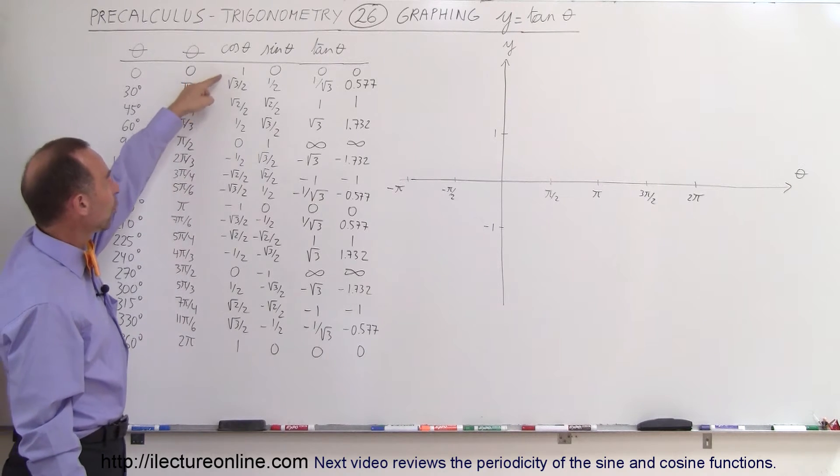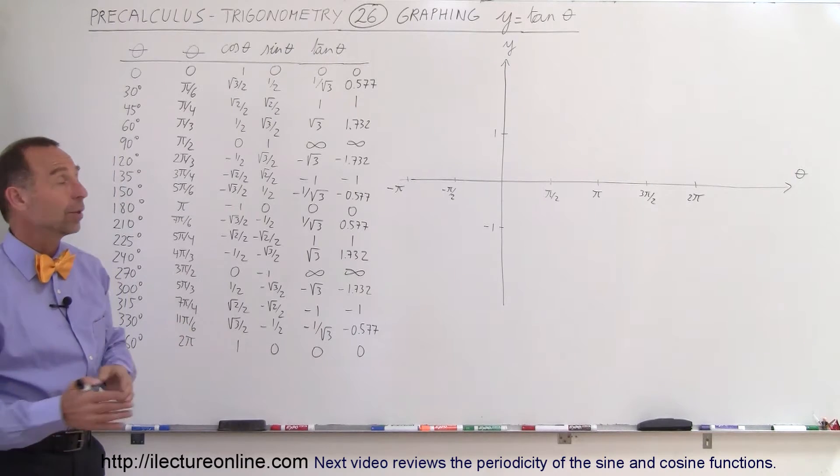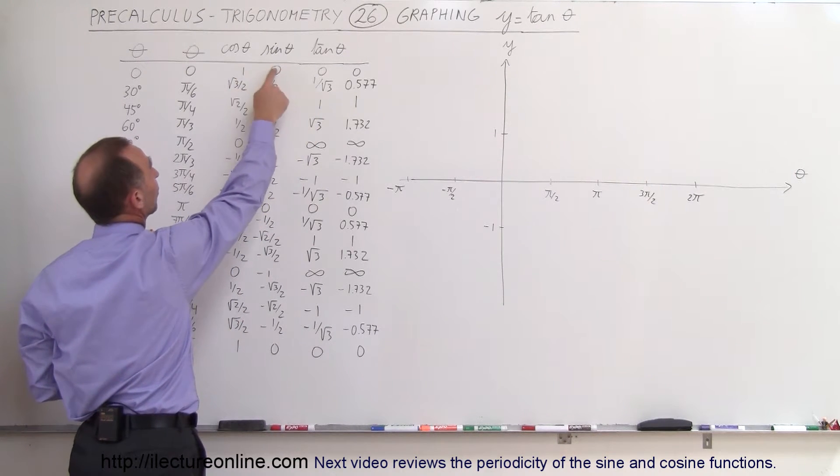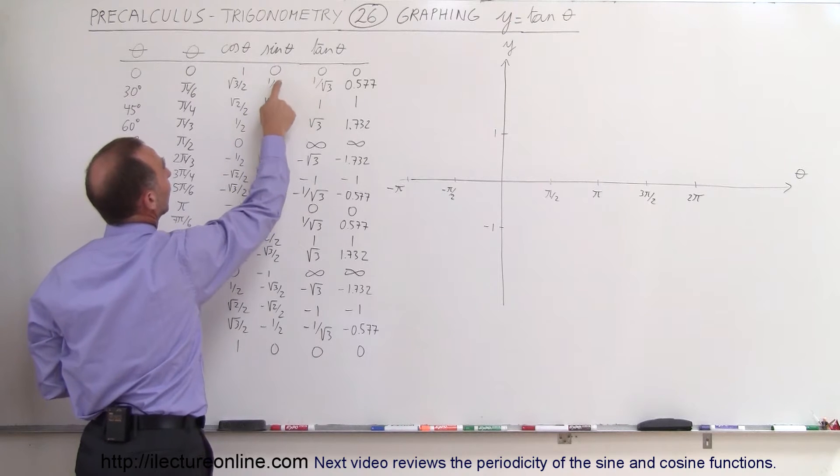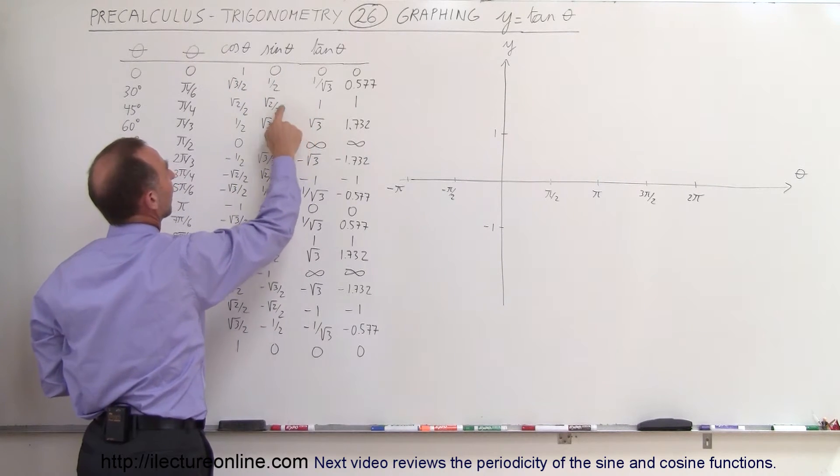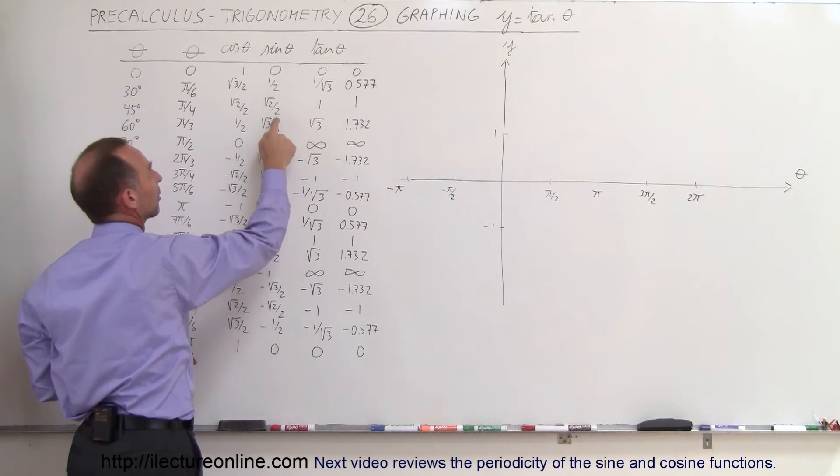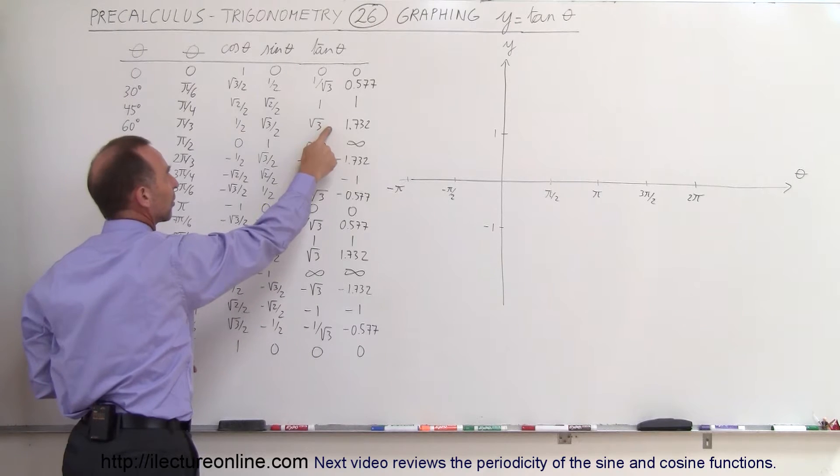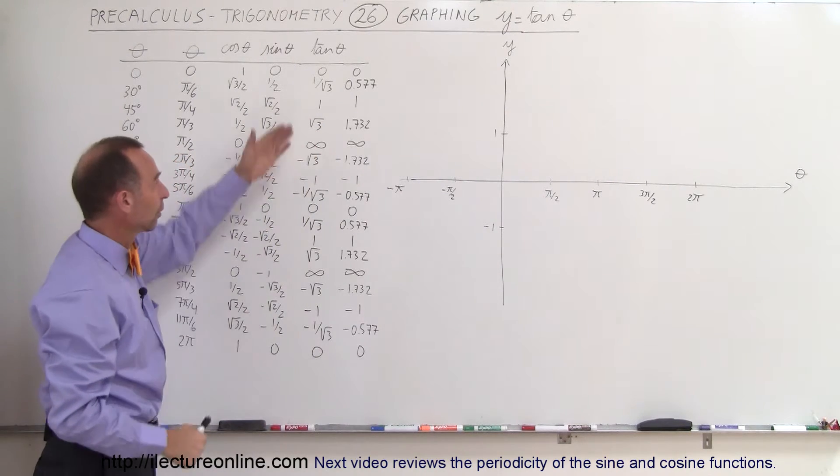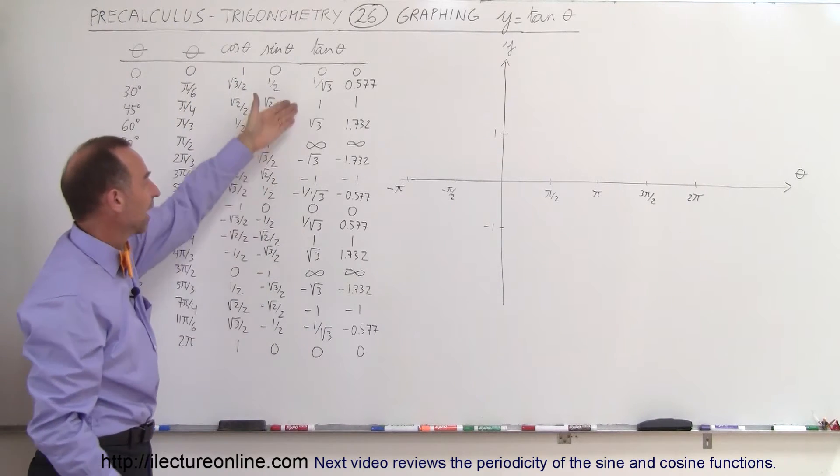Get both the cosine of theta values and the sine of theta values because then what we do to get the tangent of theta is divide the sine by the cosine. So 0 divided by 1 is 0 and 1 half divided by the square root of 3 over 2 is 1 over the square root of 3. The square root of 2 over 2 divided by the square root of 2 over 2 is 1 and the square root of 3 over 2 divided by 1 half is the square root of 3 and then 1 divided by 0 is undefined or infinity and so forth. So we go ahead and divide all of these sine values by all these cosine values and we get this.